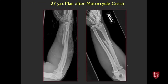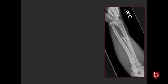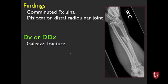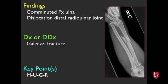Next case, 27-year-old man after a motorcycle crash. There's a fractured radius, and additionally a dislocation of the distal radioulnar joint — the ring concept. This is a Galeazzi fracture. Remember: Monteggia goes with the ulna, Galeazzi with the radius. That's a convenient mnemonic to remember these eponyms.